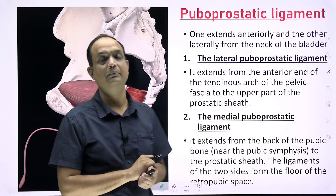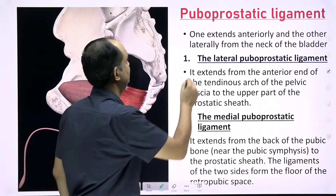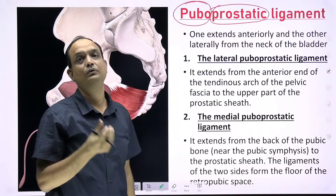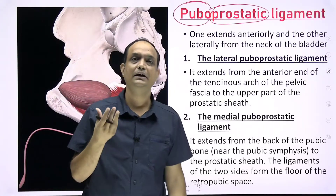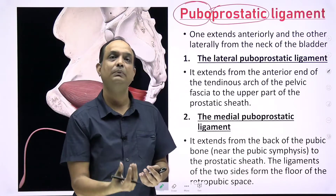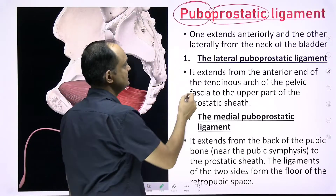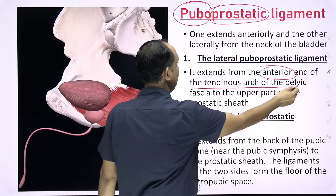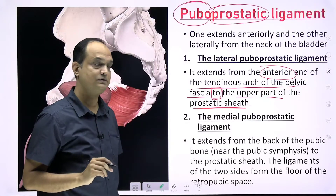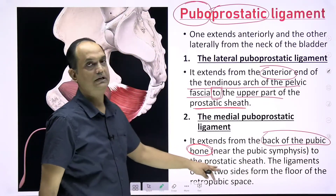First is the puboprostatic ligament in the case of the male. The word puboprostatic itself suggests a connection between the pubic bone and the prostate. The prostate is present around the neck of the urinary bladder, which is the most fixed part of the bladder in males. So when talking about the fixation of the prostate, you are actually supporting the urinary bladder from its lower side near the neck. Now, the lateral puboprostatic ligament extends from the anterior end of the tendinous arch of the pelvic fascia to the upper part of the prostatic sheath.